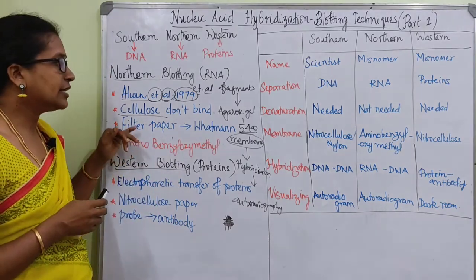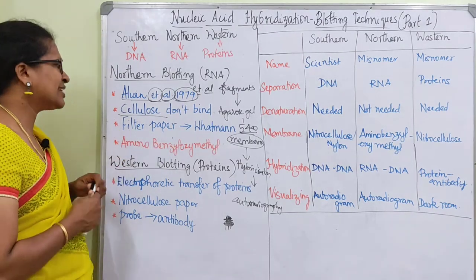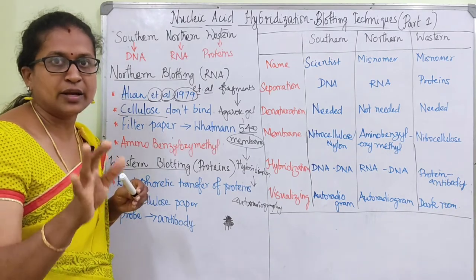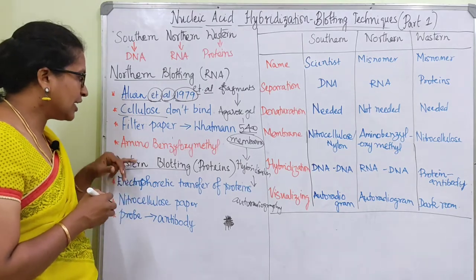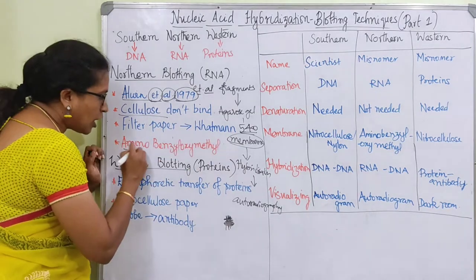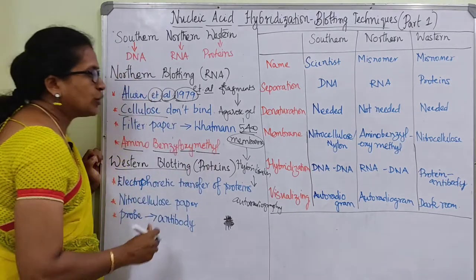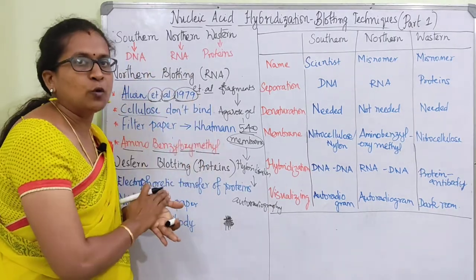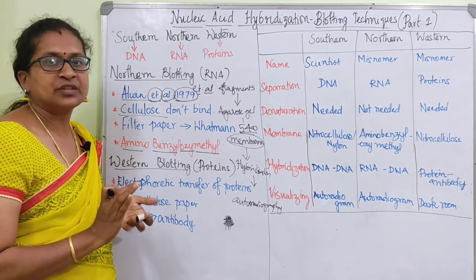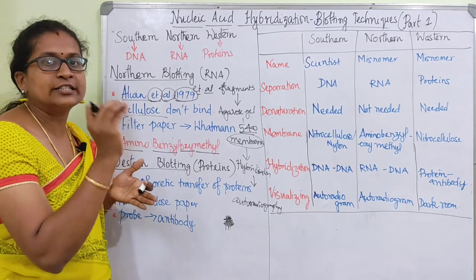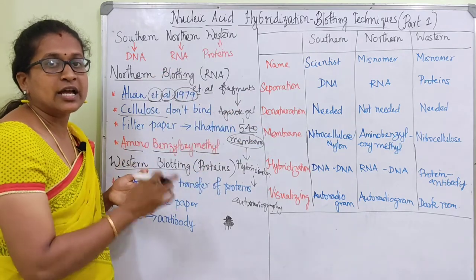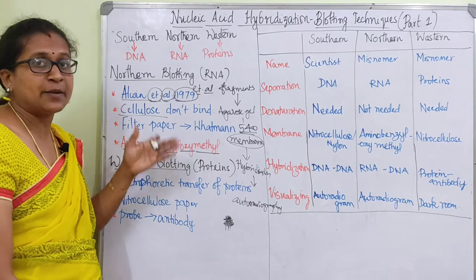Instead of nitrocellulose filter paper used in southern blotting, for northern blotting we use a nitrofiltrate membrane. We use aminobenzyloxymethyl (ABM) paper. This special nitrogen-based filter paper binds RNA. So southern blotting uses nitrocellulose paper, while northern blotting uses nitrofiltrate or ABM paper.